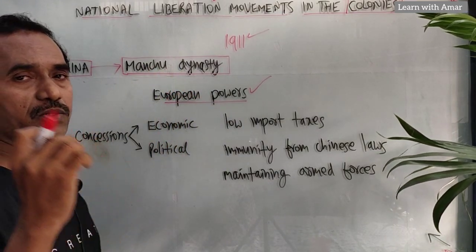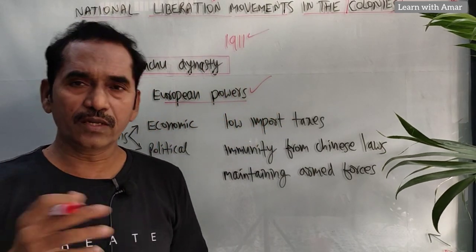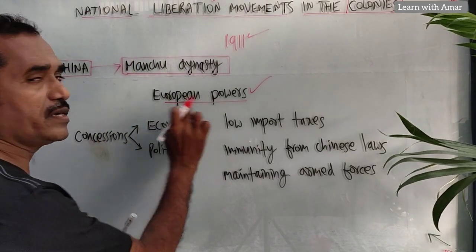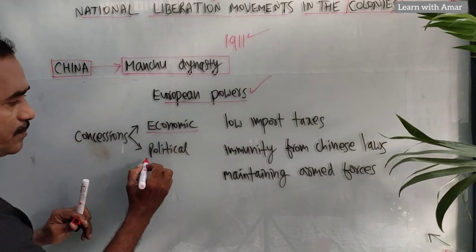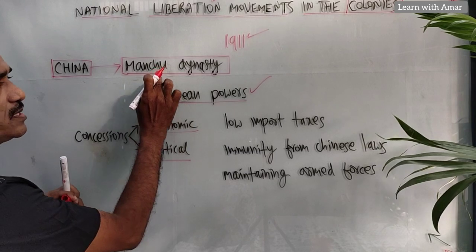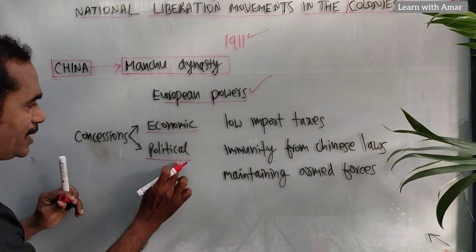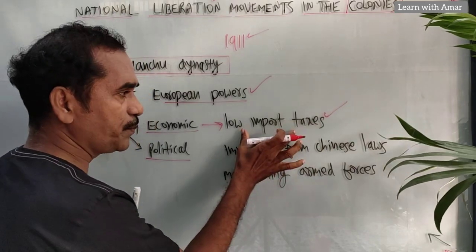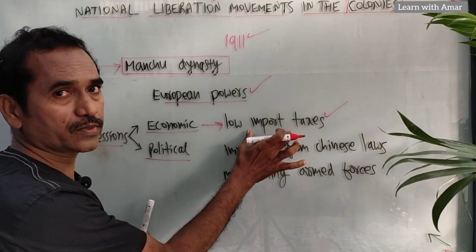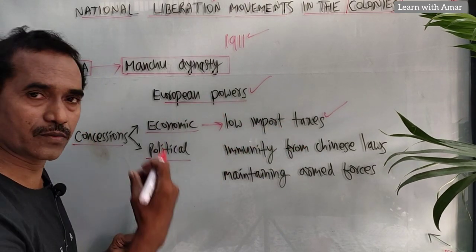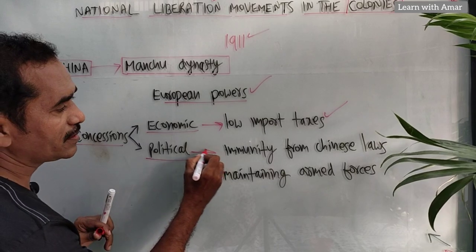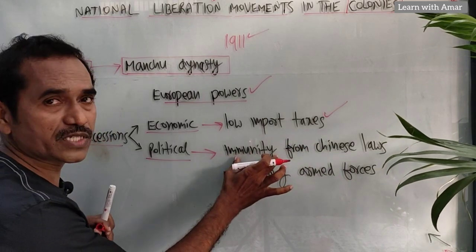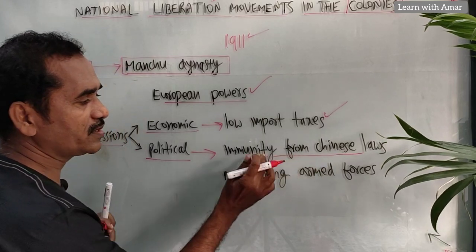The Manchu dynasty failed to defend the interest of China. They allowed all European powers to do their activities in China. European powers demanded economic and political concessions from the emperors — low import taxes for their goods, and immunity, meaning exemption from Chinese laws.